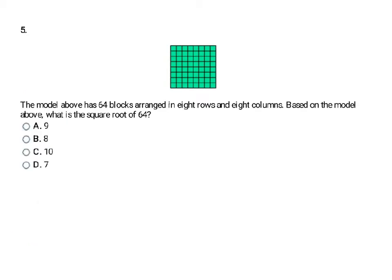Number 5 says the model above has 64 blocks arranged in 8 rows and 8 columns. Based on the model, what is the square root of 64? This tells us it's an 8 by 8 with a total of 64 blocks. Because there's a total of 64, the square root of 64 is going to be this one side length. One side length here is 8 blocks. So my answer is B.